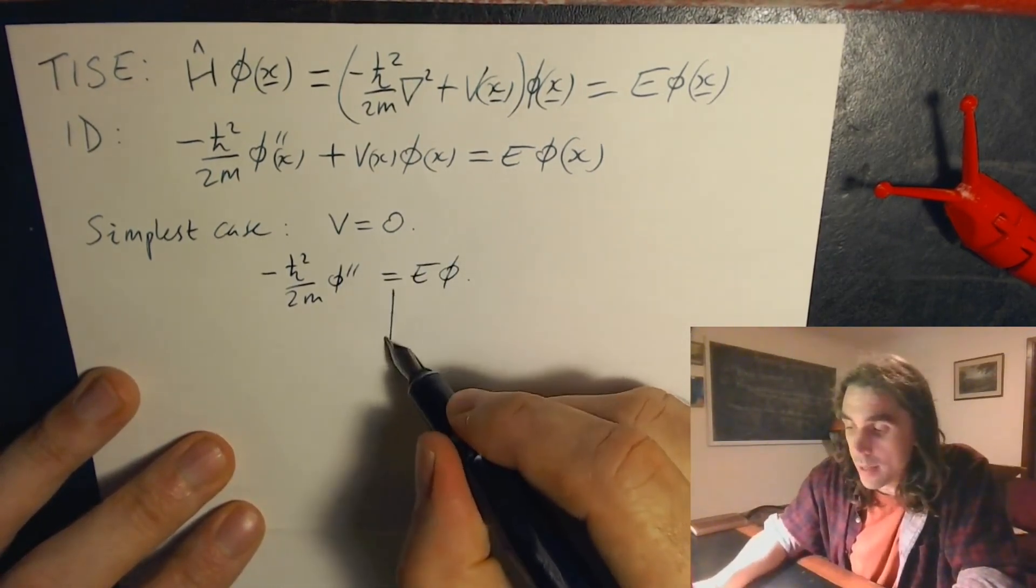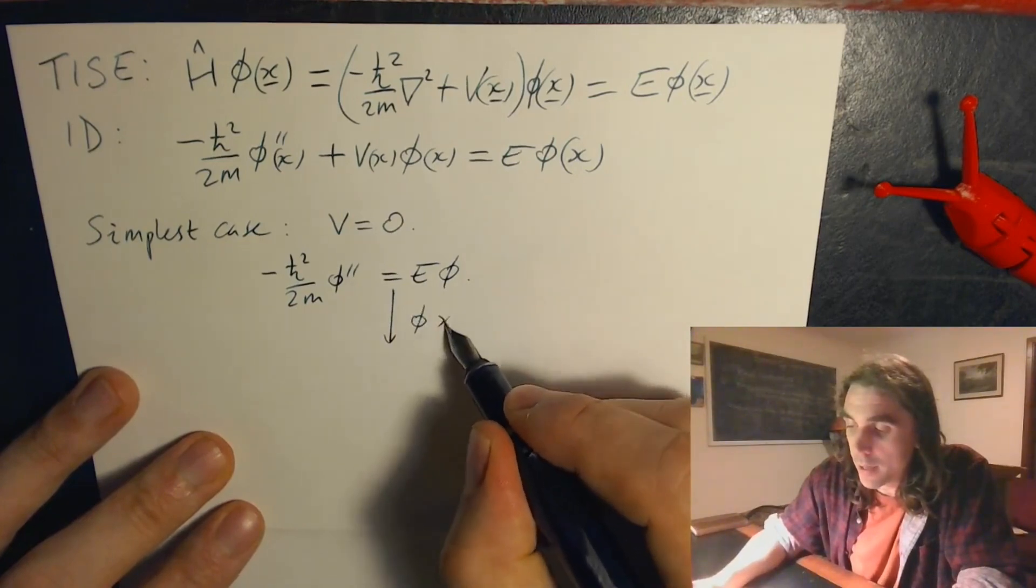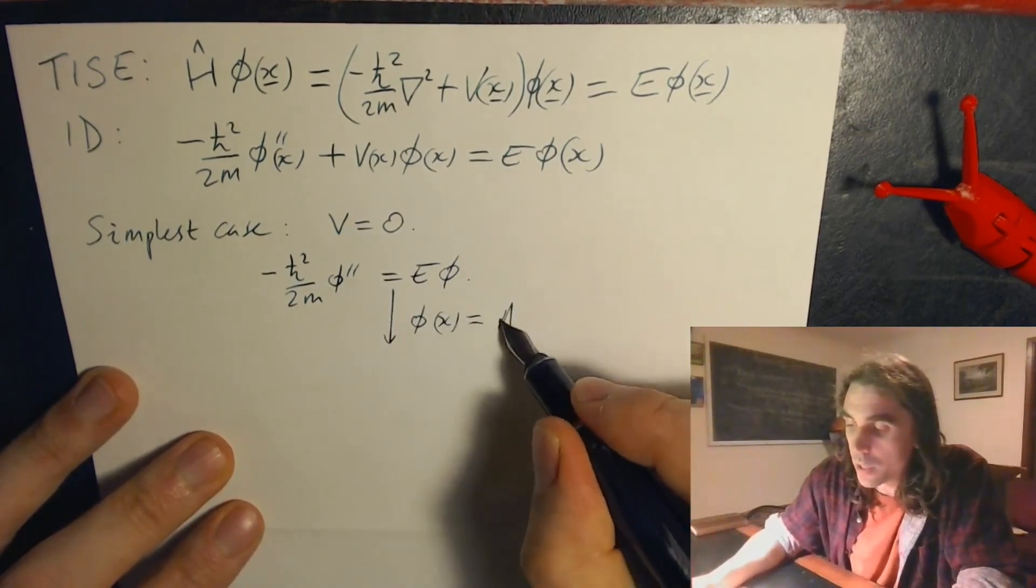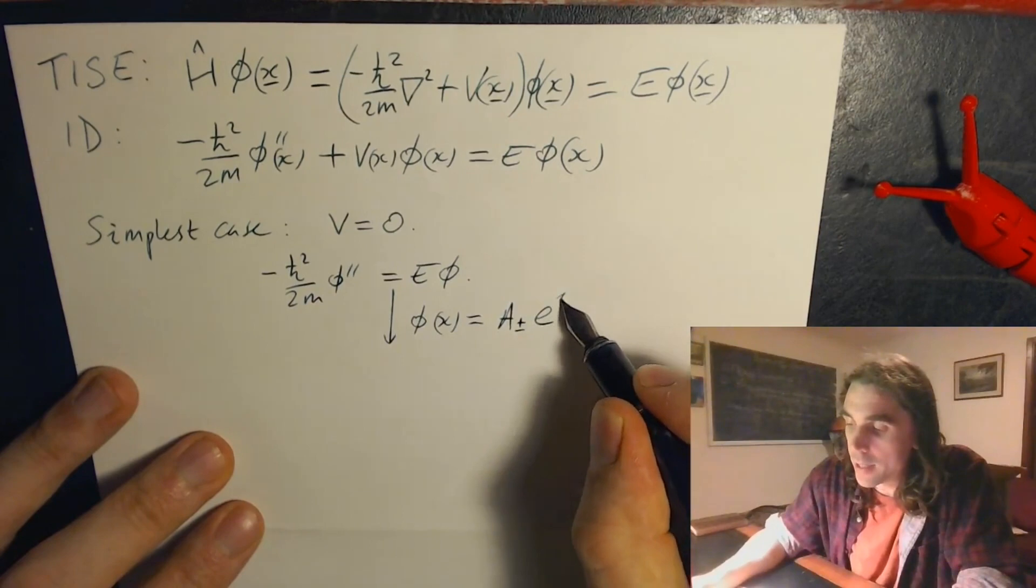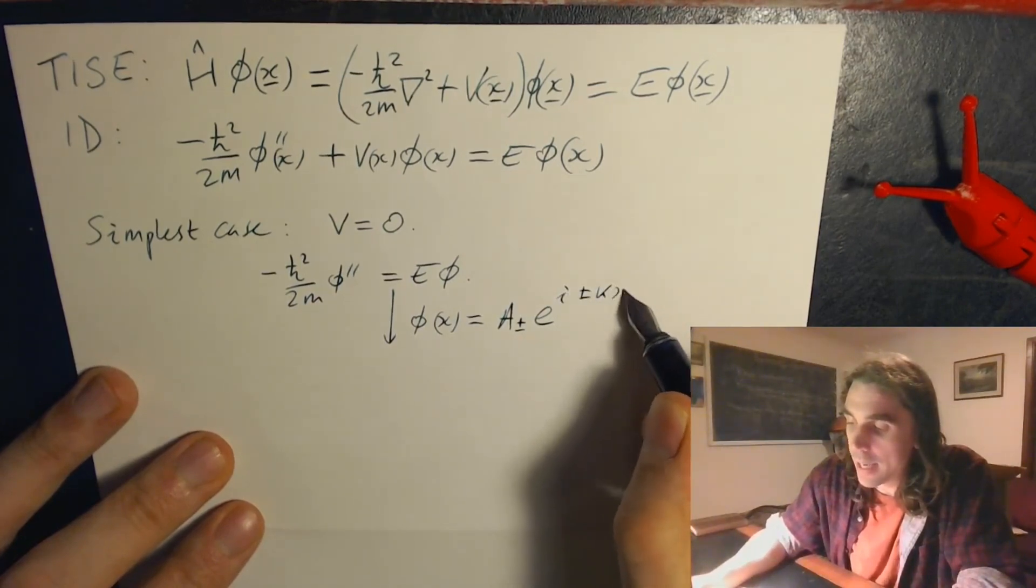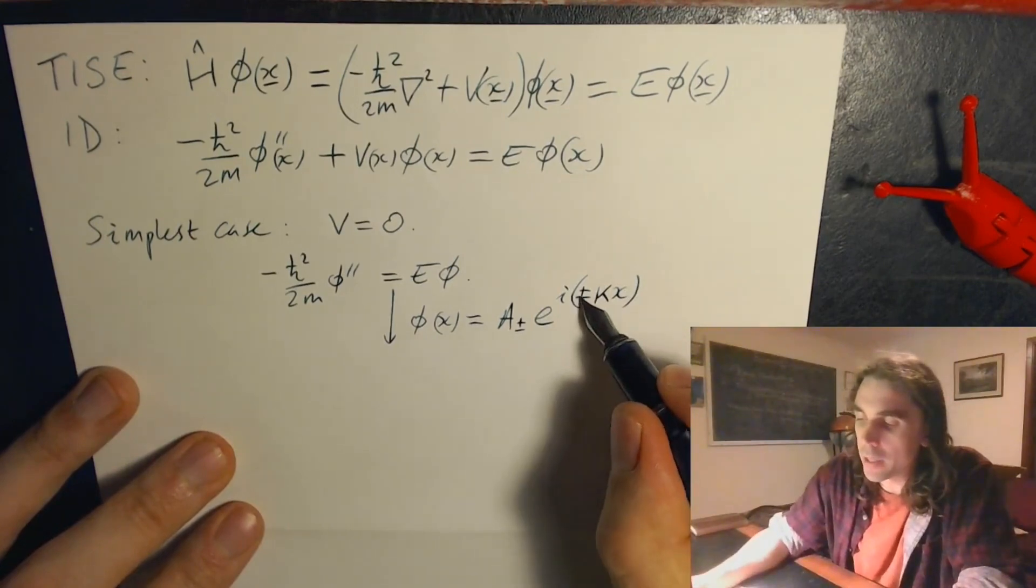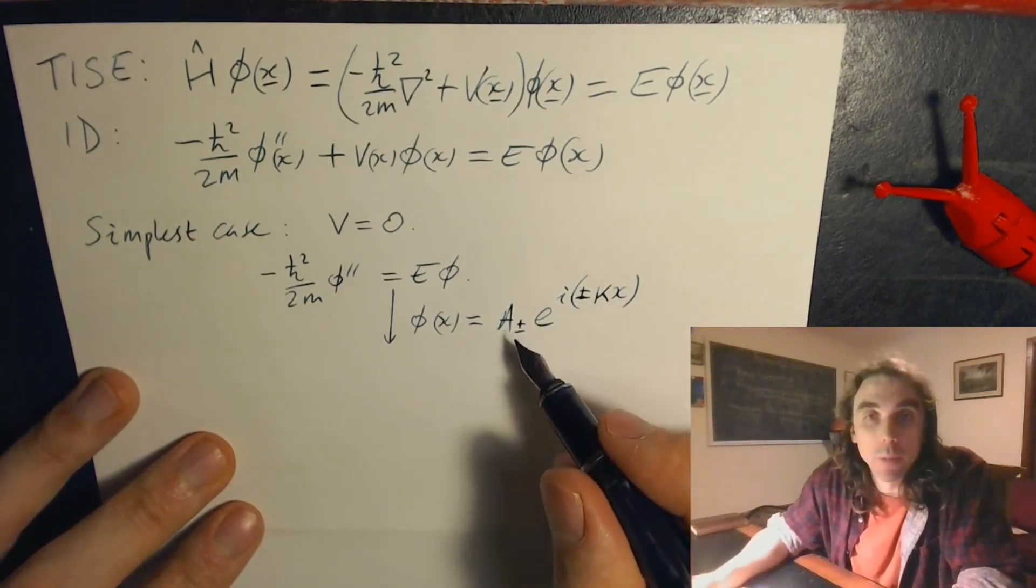This can be solved with an ansatz. We can say that phi of x is equal to a plus or minus e to the i plus or minus kx, where a plus or minus are just some arbitrary coefficients.